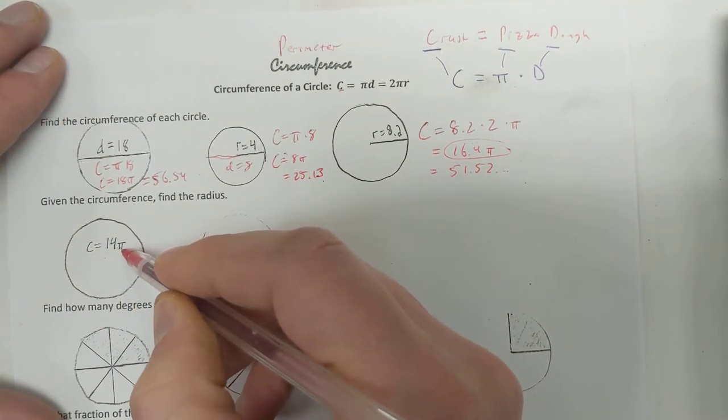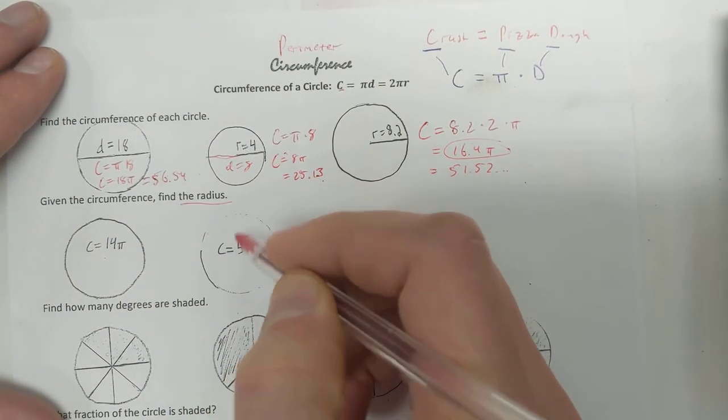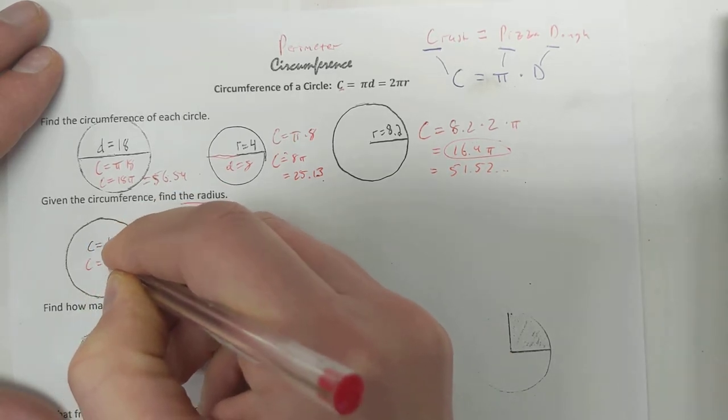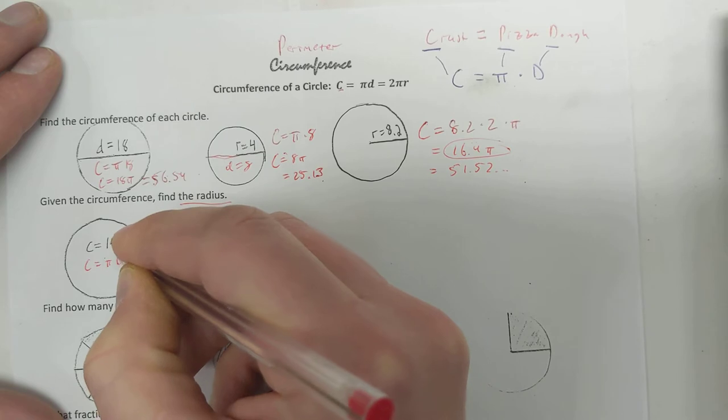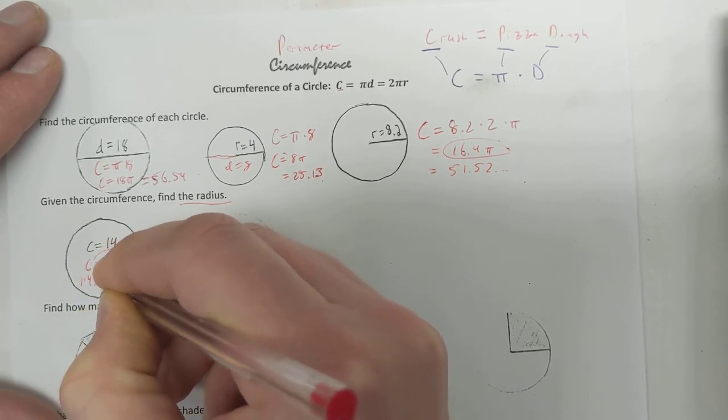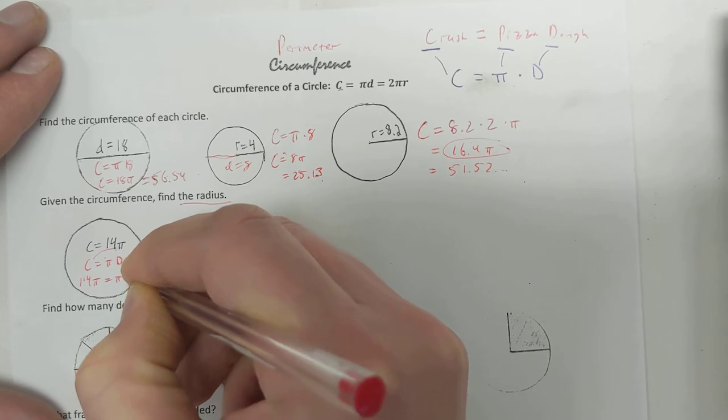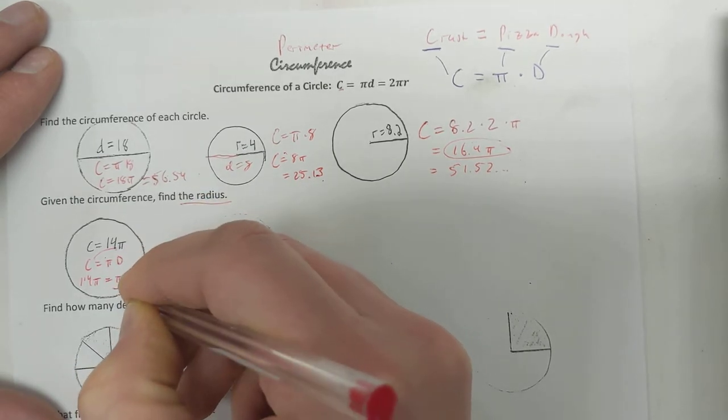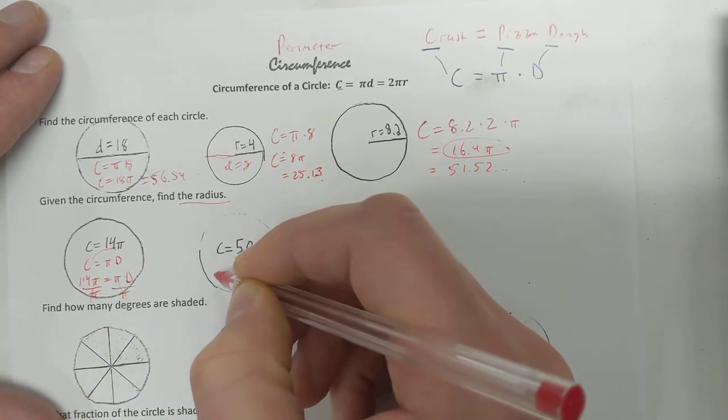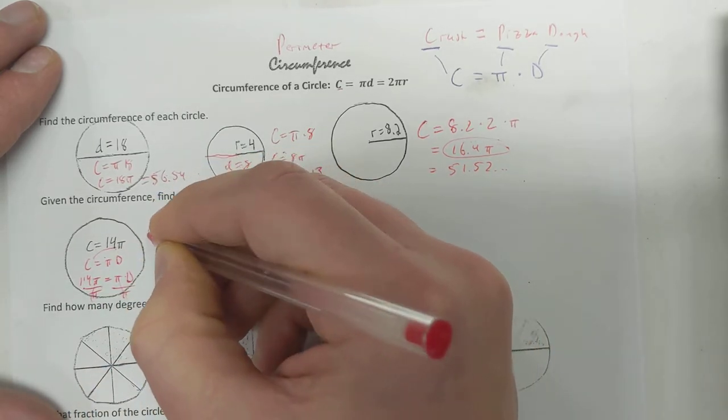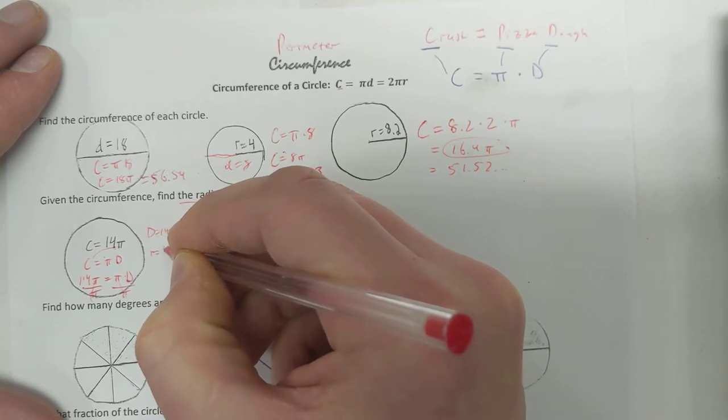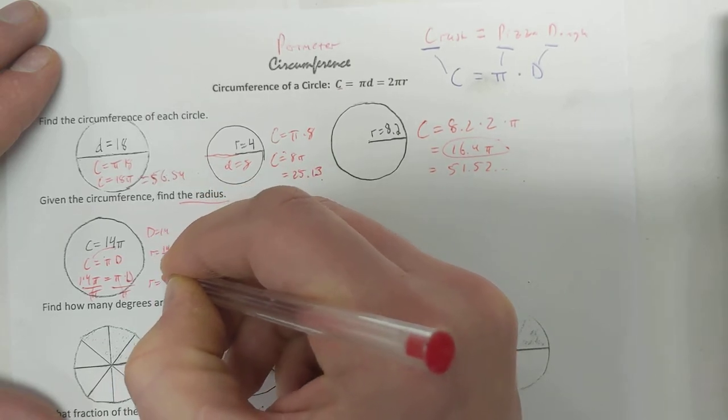The circumference of this is 14 pi. We've got to find the radius. Well, I'm going to use my formula. Circumference equals pi D. I know this circumference is 14 pi. So 14 pi equals pi times diameter. If I divide both sides by pi, well, that's easy. I'm just down to 14. So the diameter is 14. But the radius is going to be 14 divided by 2. So the radius is going to be 7.